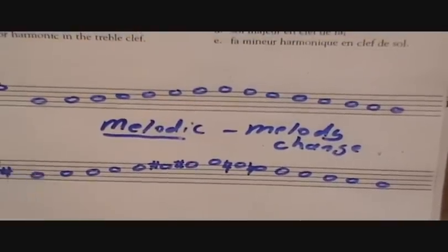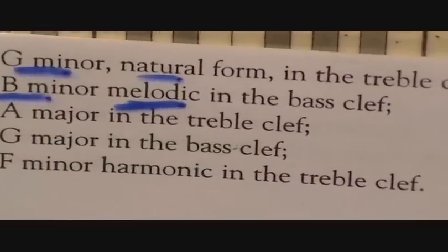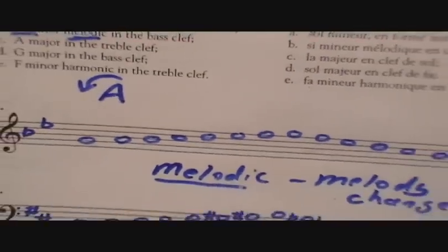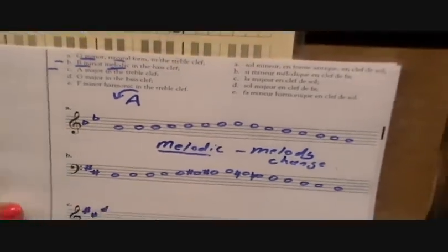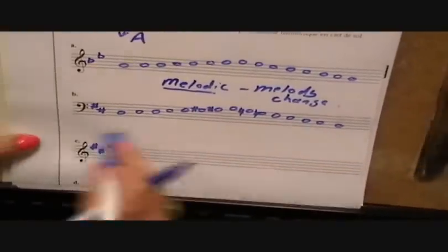We'll just do one more in the major - A major in the treble clef. So A major, we know we're looking for sharps. What comes before A? Father Charles goes. And then you would start on A, and you just write up and down, and that's all you'd have to do for major.